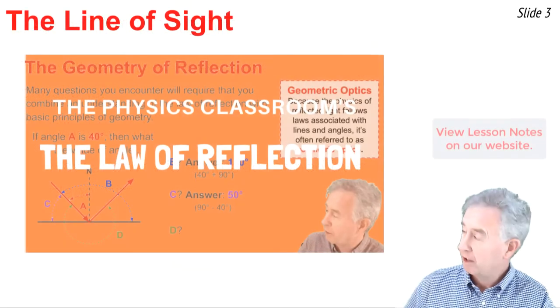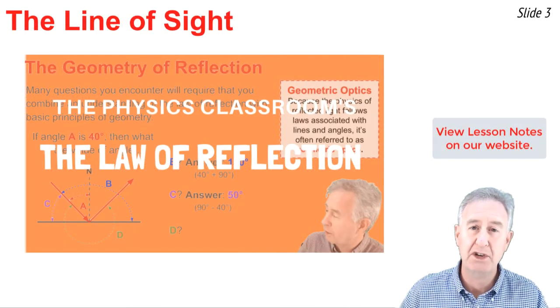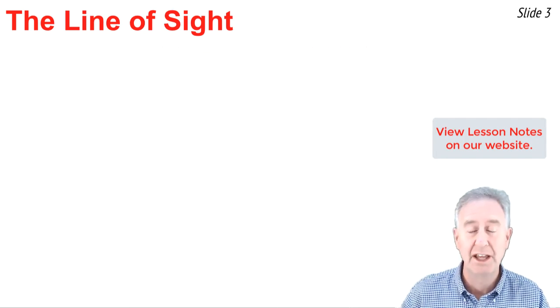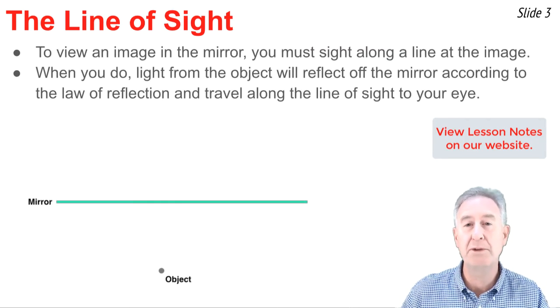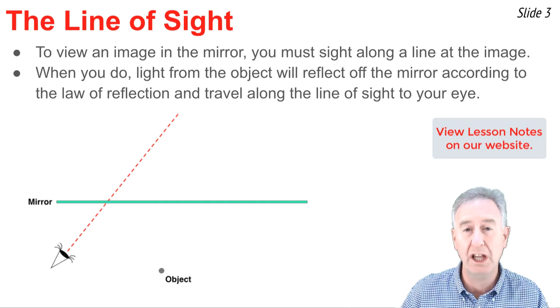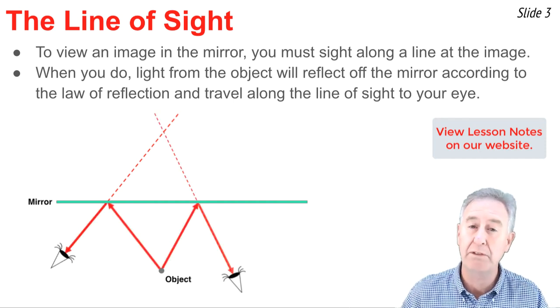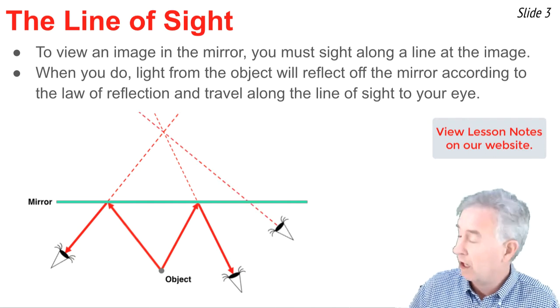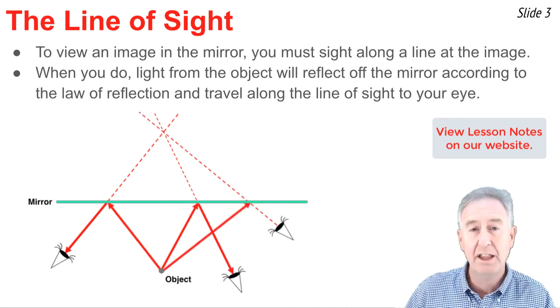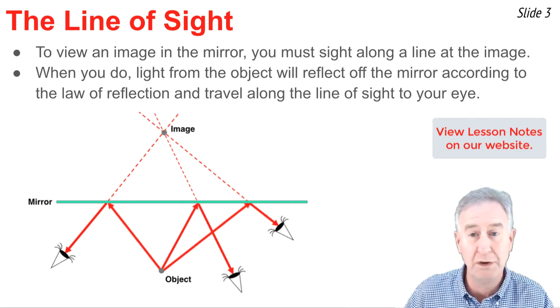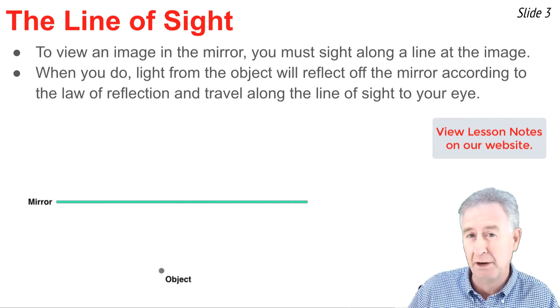In a previous video, this one, I discussed the law of reflection. One part of that video emphasized the importance of the line of sight. The idea is that if you want to view the image of an object, you have to sight along a line at the location where the image is at. And when you do, a ray of light will reflect off the mirror towards your eye along that line of sight. The light originates at the object location, approaches the mirror, and reflects at the location where your line of sight intersects with the mirror.